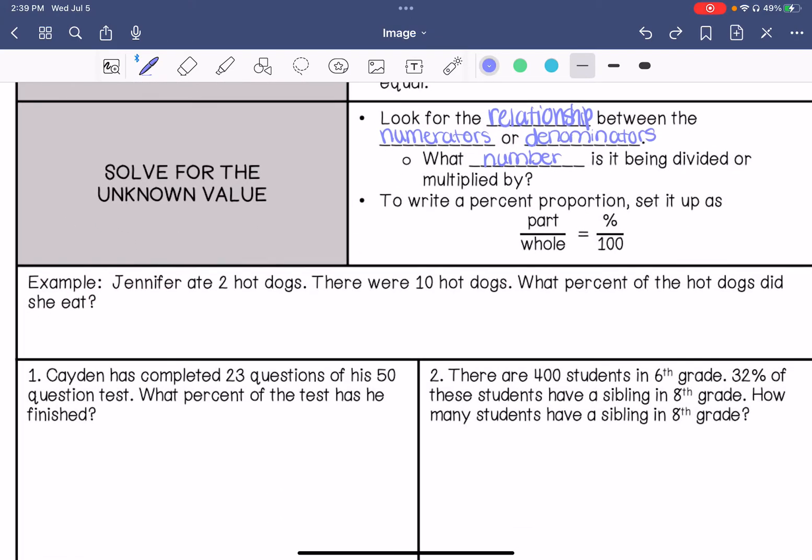So for example, Jennifer ate two hot dogs. There were 10 hot dogs. What percent of the hot dogs did she eat? So my part over whole, she ate two out of 10. We're looking for the percent, and percents are over 100. 10 times 10 is 100, so 2 times 10 is 20, so 20% is our answer.